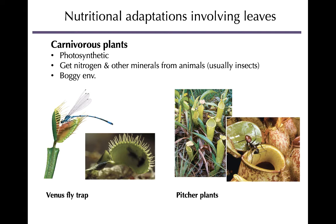One modification of leaves is found on carnivorous plants, which capture and digest animals — usually insects — using their leaves. The closing part of a Venus flytrap and the pitcher of a pitcher plant are both highly modified leaves. These plants are green and do perform photosynthesis, making their own carbon compounds. They 'eat' animals primarily to obtain nitrogen, allowing them to live in nitrogen-poor environments like bogs.